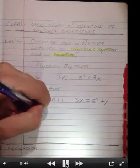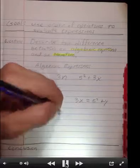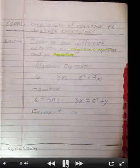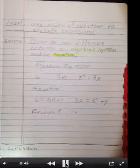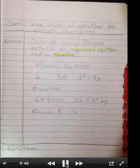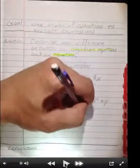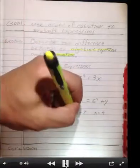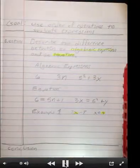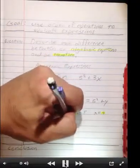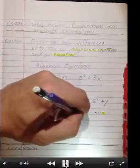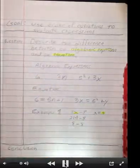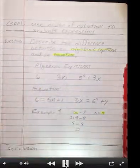For our first example, we're going to evaluate an expression given a value. So the expression is 2x minus 8 when the value of x is 4. So we replace the x with its value of 4. So where I highlighted in yellow the x, I'm going to replace with a 4. 2 times 4 is 8, 8 minus 8 is 0, so this is an example of evaluating an expression.